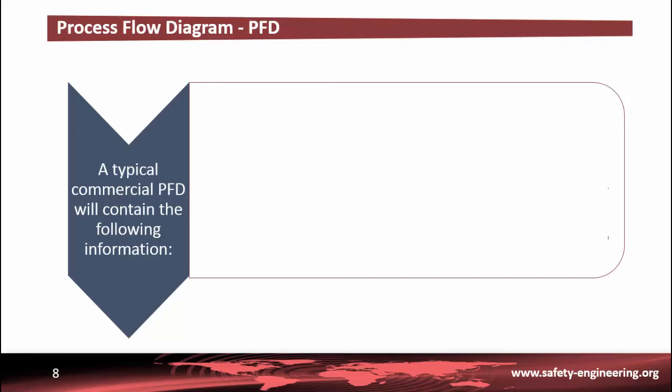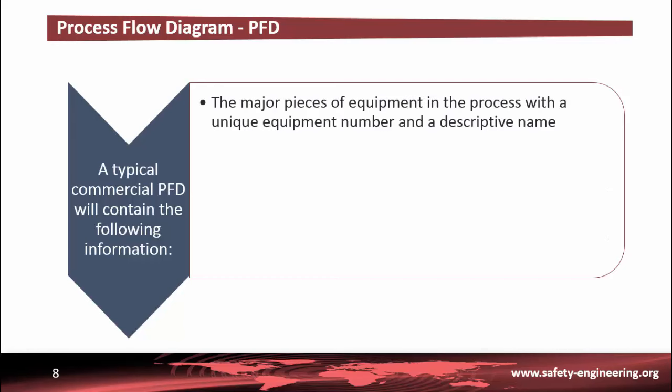A typical commercial PFD will contain the following information. First, all the major pieces of equipment in the process are represented on the diagrams along with a description of the equipment. Each piece of equipment is assigned a unique equipment number and a descriptive name. Second, all process flow streams are shown and identified by a number. A description of process conditions and the chemical composition of each stream is included. These data are either displayed directly on the PFD or included in the accompanying flow summary table.